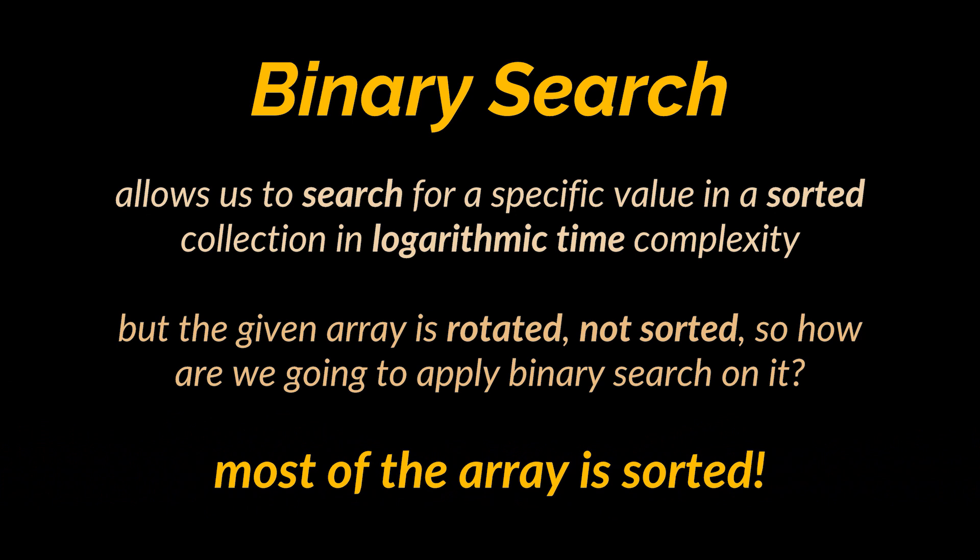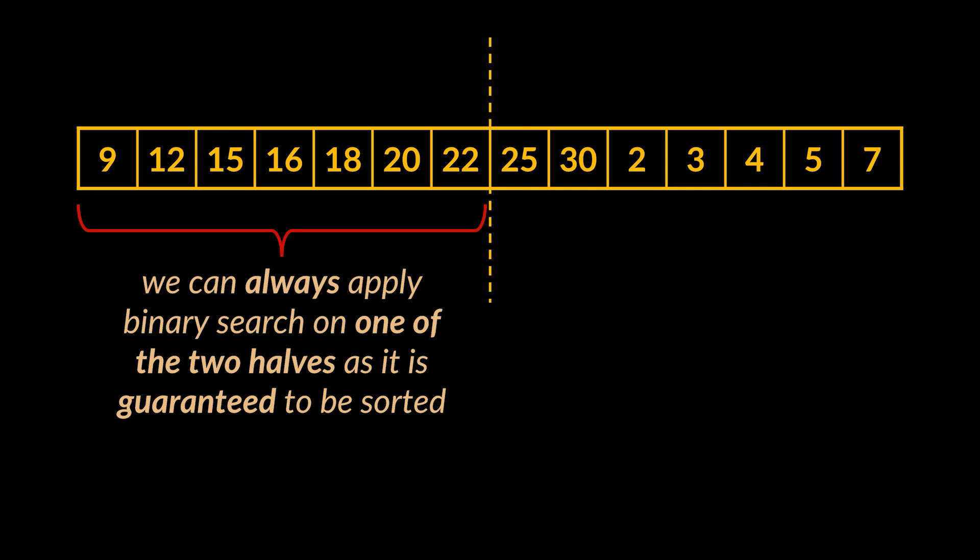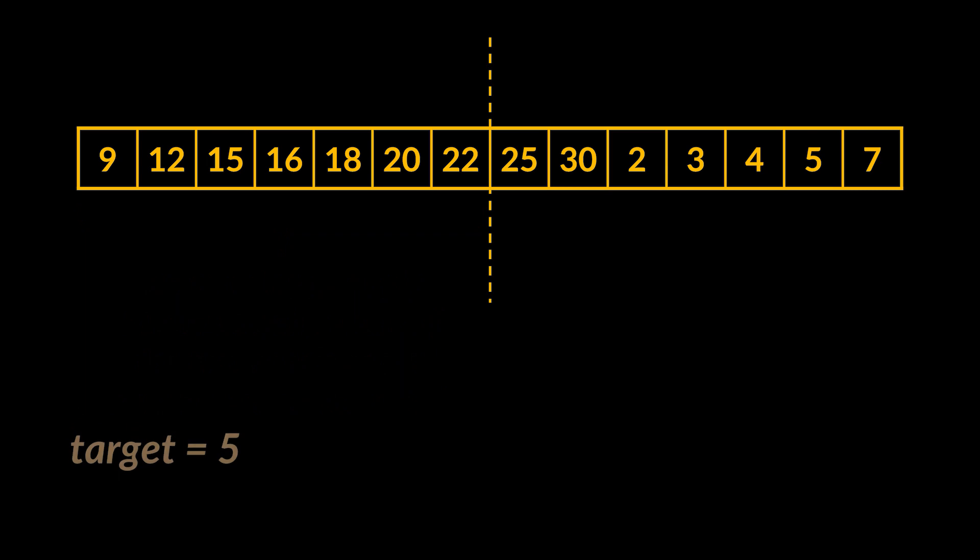Well, maybe the whole array isn't sorted, but most of it is. You see, if the array is rotated as we previously mentioned, then any provided array can be divided in half as you can see in front of you, and this means that we can apply binary search on this chunk of the array as it is sorted.